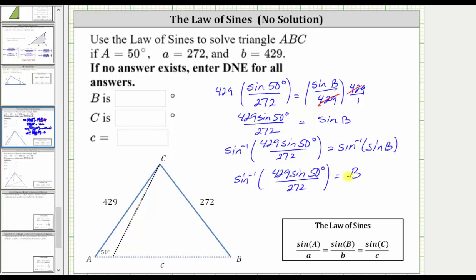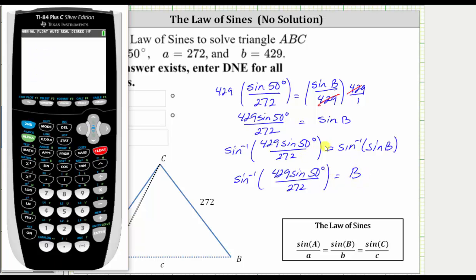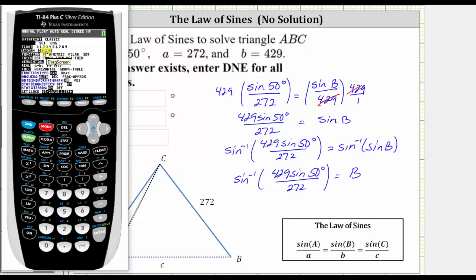Now we'll go to the calculator to determine the measure of angle B. We first need to make sure we are in degree mode by pressing the mode key. Notice how degree is highlighted. If degree was not highlighted, we would use the arrows to go down to degree and press enter. Now we go back to the home screen by pressing second mode for quit.